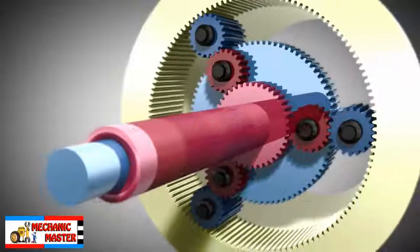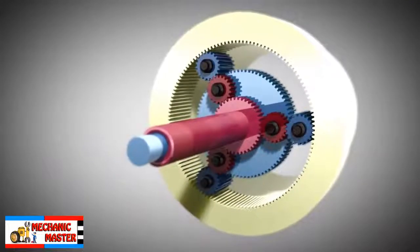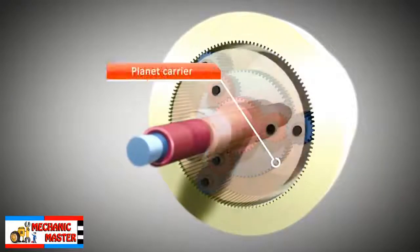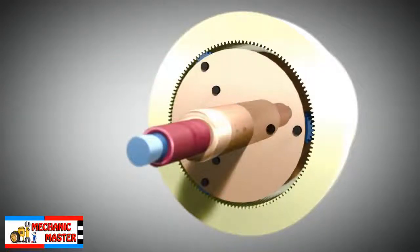All planets of the transmission have a single planet carrier. With this kind of automatic transmission, five gear ratios can be achieved by locking and connecting components.